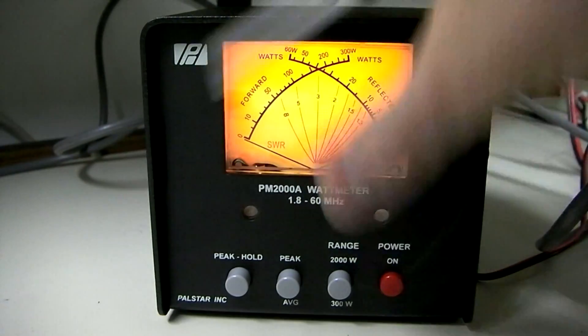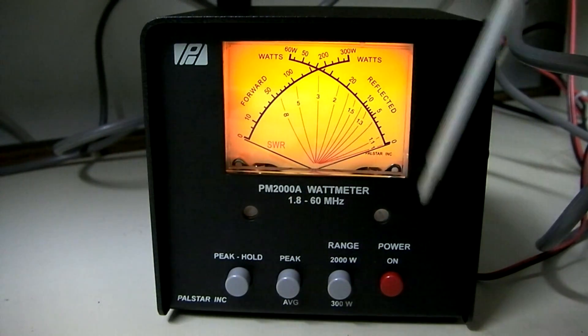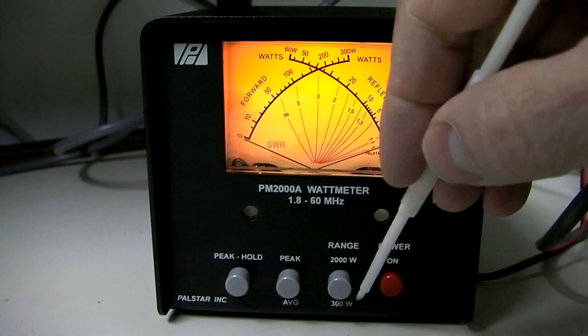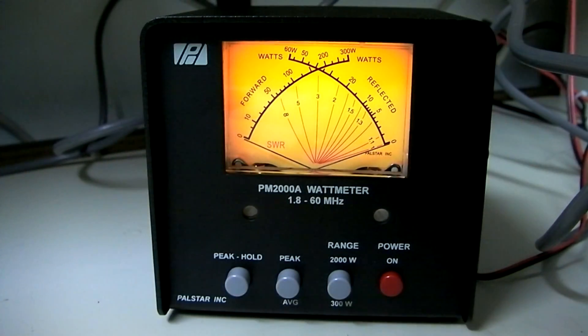All right, let's show the meter in action. We'll power it on. You'll see the illumination comes on. We'll leave it in the 300-watt range. We've got it in average mode. We don't have the peak hold on.